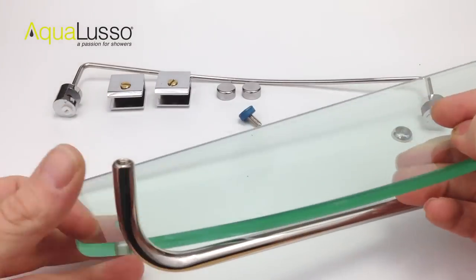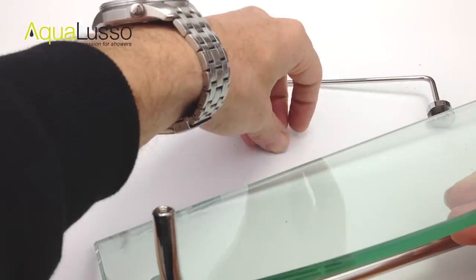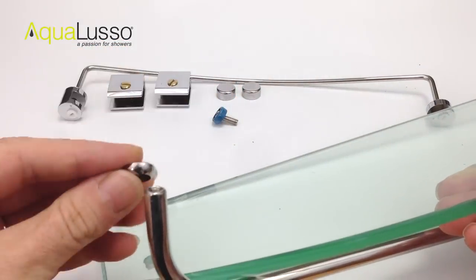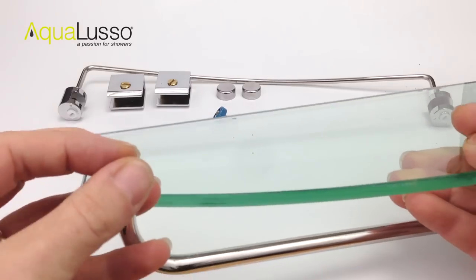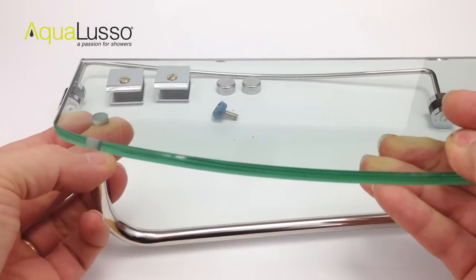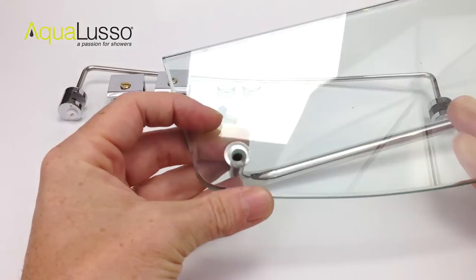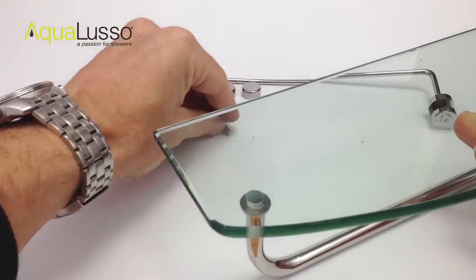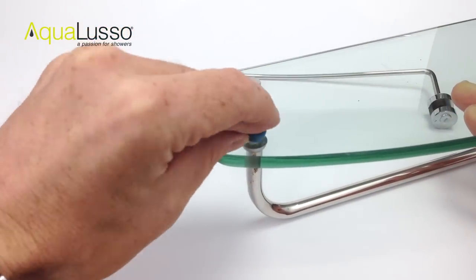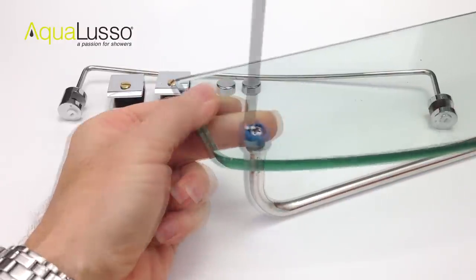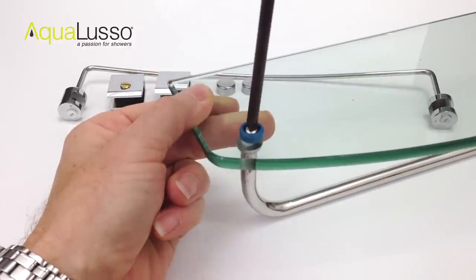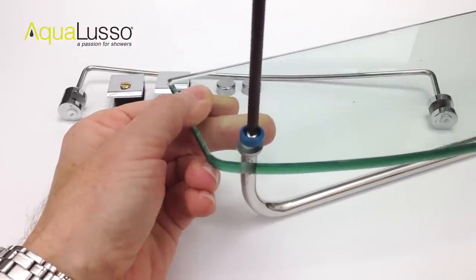Moving on to the other side, we need to repeat the same process. First, we're going to put the chrome grommet at the end of the rail. Align the hole and put the washer and screw in position and fix it.